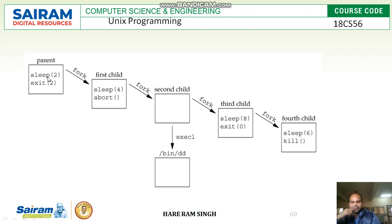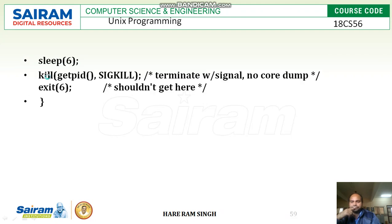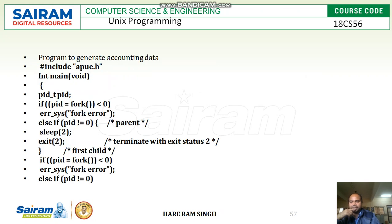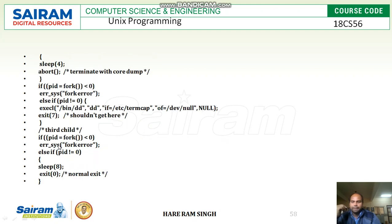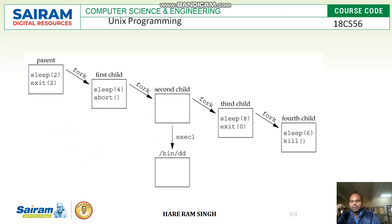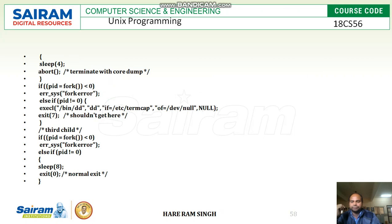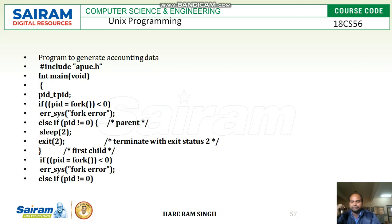Let us see in what order the records are created. The parent process is created first, and then a child process is created from it. For the parent process, we are making it sleep and then exit with status 2. This parent process has created the first child process.